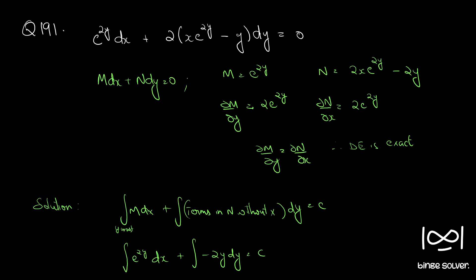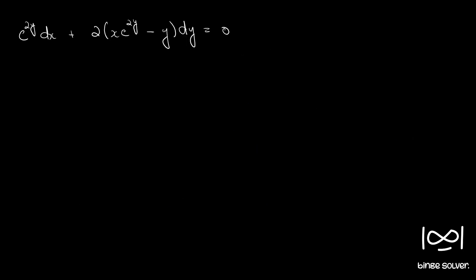We will now solve the same question by rearrangement, converting it into parts that can be easily integrated. Rearranging, we have e raised to 2y dx plus 2x e raised to 2y dy minus 2y dy equal to 0.